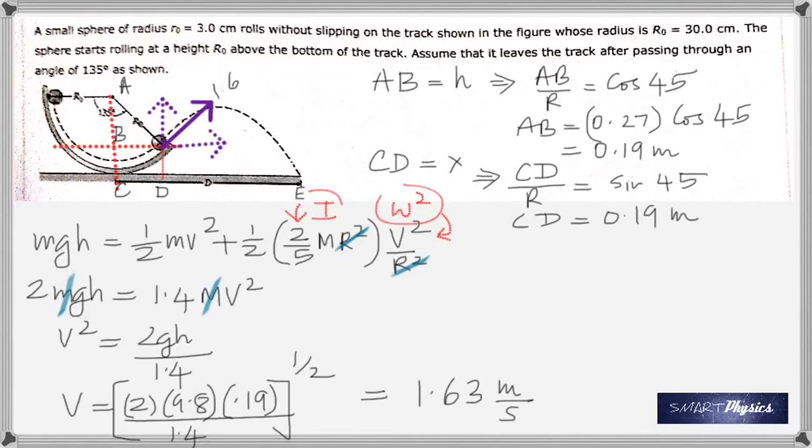That's the center - when we measure distance, we measure from the center. Although the bottom of the sphere is touching the surface, this dotted line shows the path taken by the center. That's why you have 0.27.